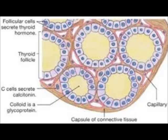The follicular cells produce or synthesize the thyroid hormone, which is very essential for life. Around these cells there are para-follicular cells, or C cells, that produce calcitonin, which reduces calcium levels.